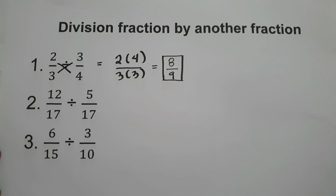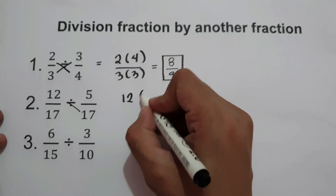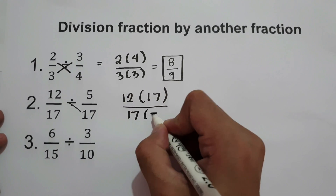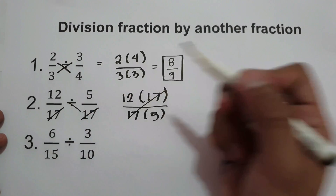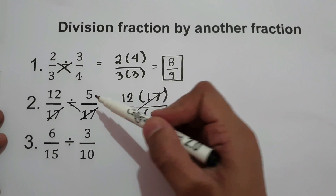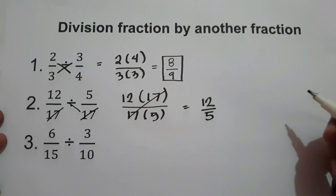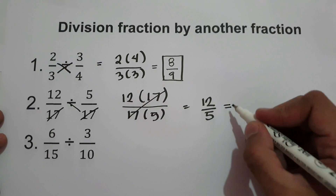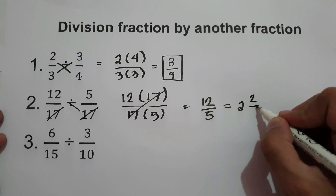What about number 2? We have 12/17 divided by 5/17. Let's cross multiply: 12 times 17 over 17 times 5. We can cancel the 17 in the numerator and denominator, leaving us with 12 over 5. That equals 2 with a remainder of 2, so the answer is 2 and 2/5.